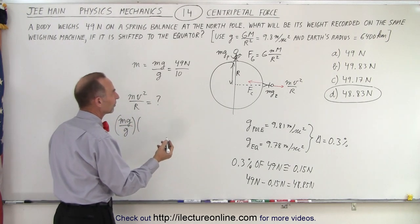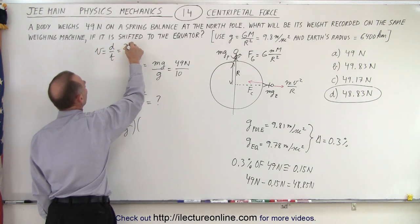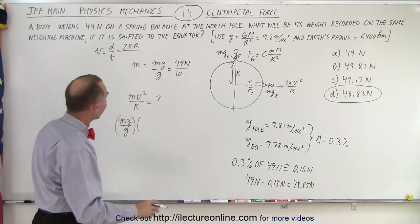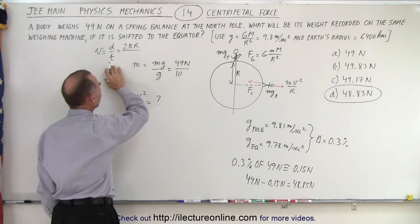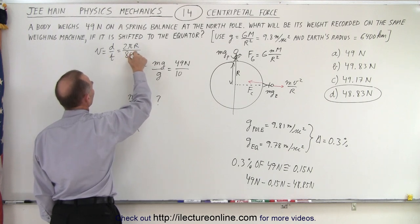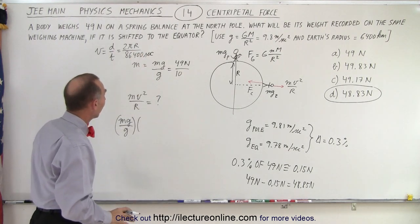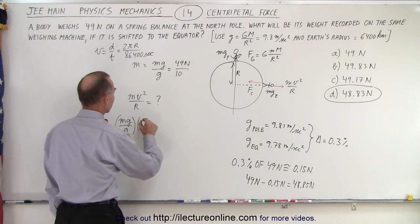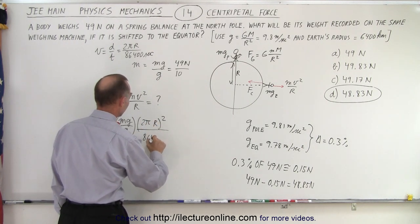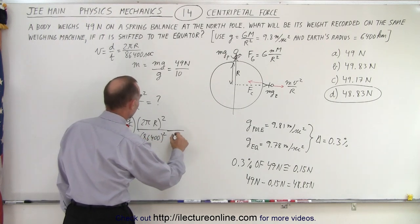Now v, what would be the velocity of the earth? Well, v is equal to distance divided by time, which is 2πr, the radius of the earth r times 2π, which is the circumference of the earth, divided by the time of an entire day. That would be equal to roughly 86,400 seconds, because that's the day in terms of seconds. And that would then go in here. So we get 2π times the radius squared, divided by the period squared, which is 86,400 squared. And then we divide that by the radius r.